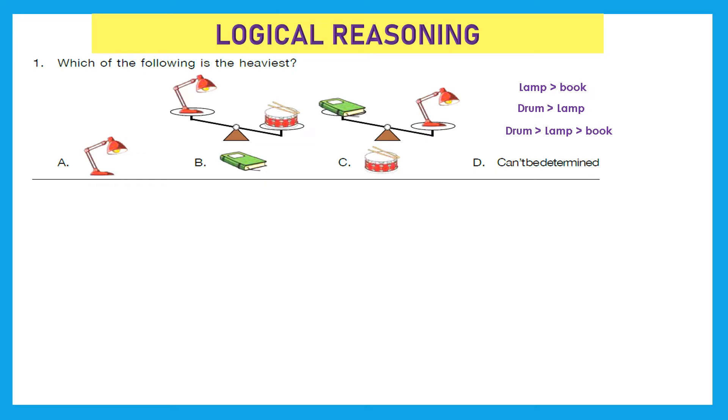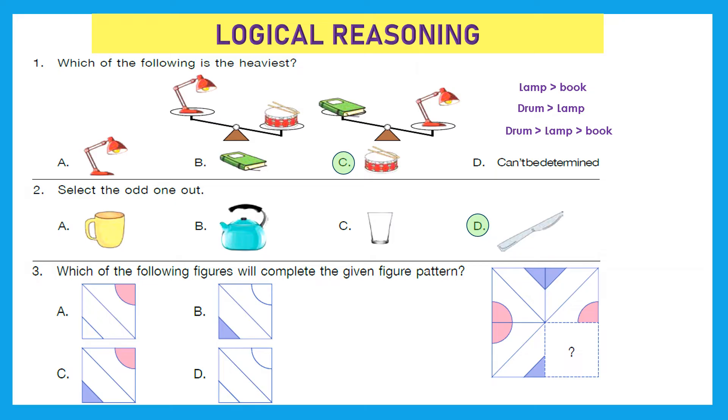Question 2: Select the odd one out - cup, kettle, glass, or knife. Here the odd one out is knife because other three are related to something liquid, and knife is used for chopping or cutting. Question 3: Which of the following figures will complete the given figure pattern? It looks like it is C. Yes, option C is the right answer.